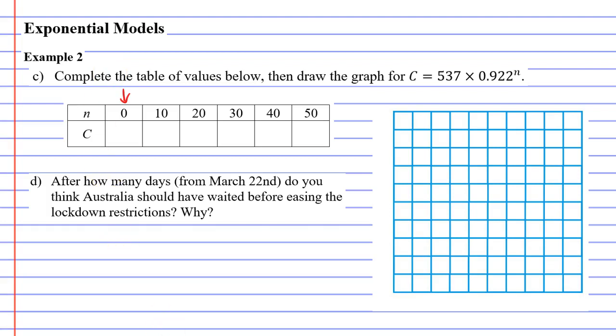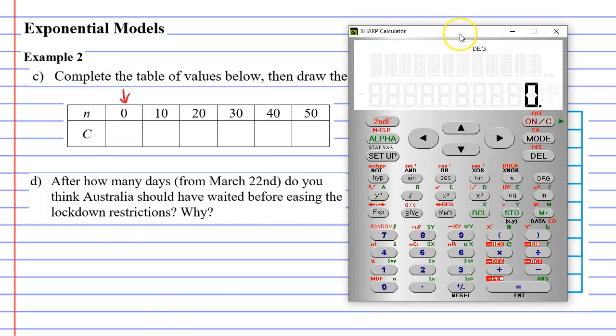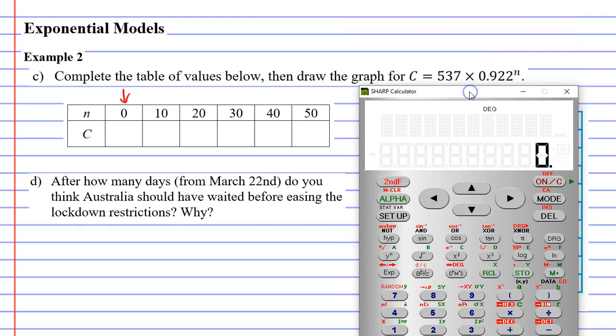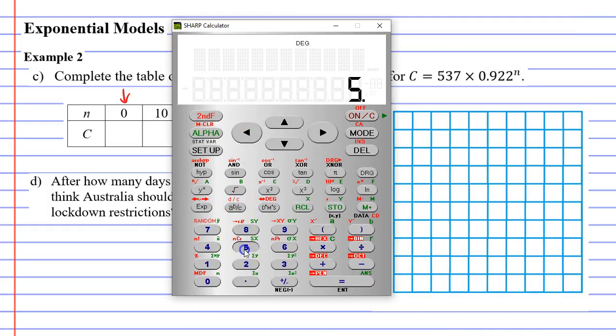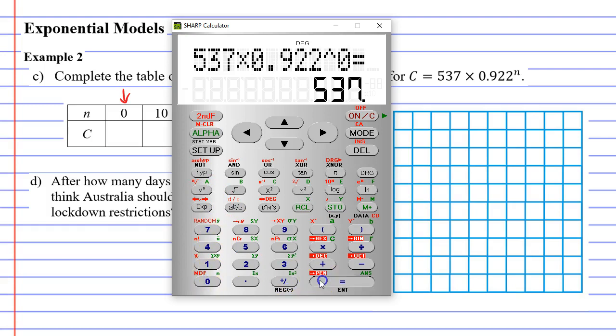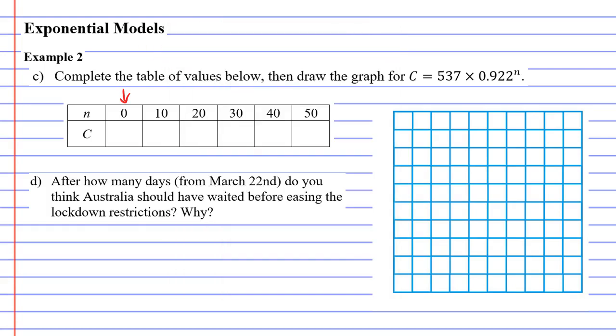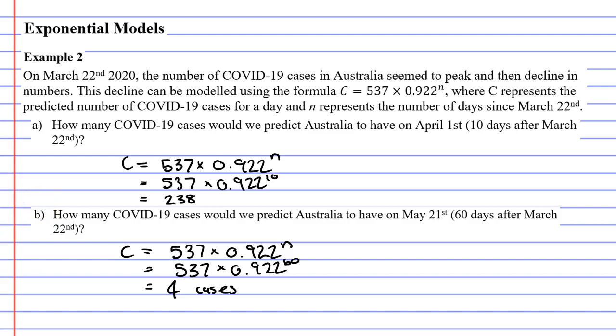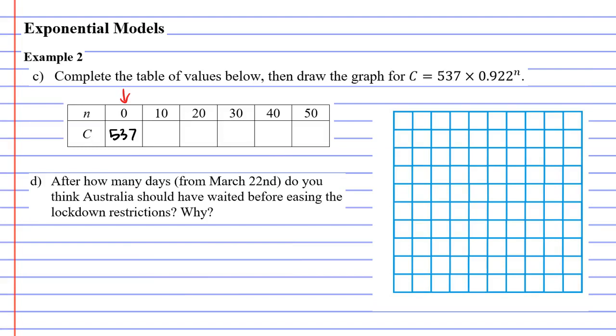So in the first row, N equals 0. So we'll type that in our calculator here. 537 times 0.922 to the power of 0. And that comes out to 537. 10 days later, we've already calculated that. We found that when N was 10, we had 238 cases.